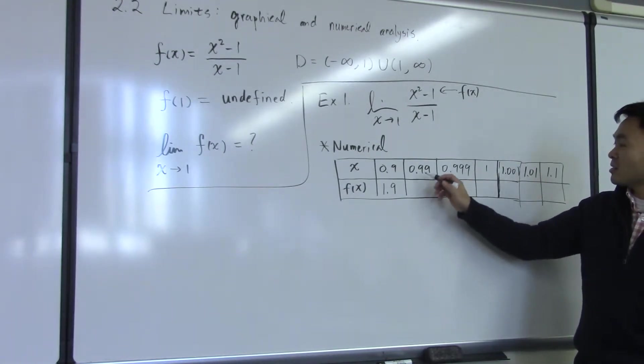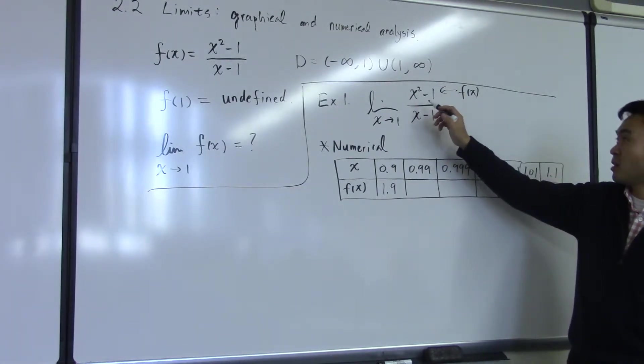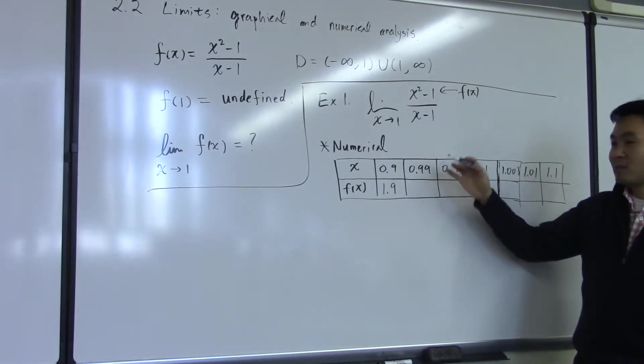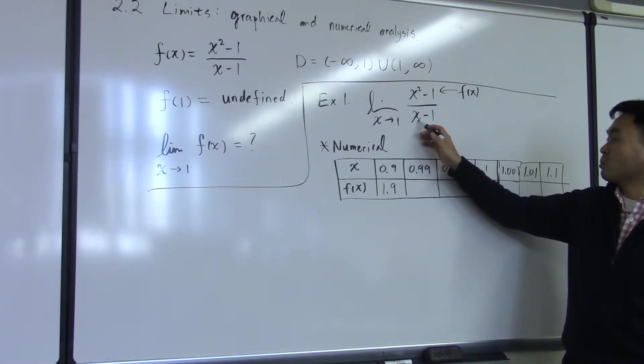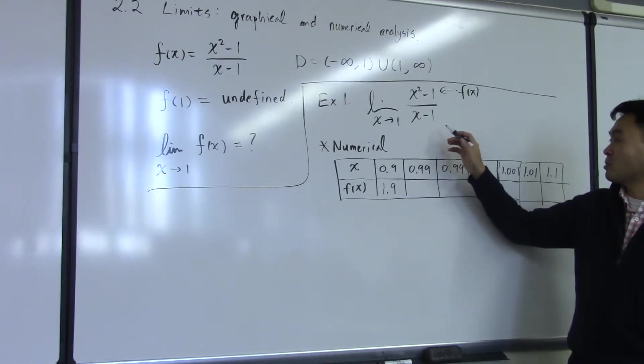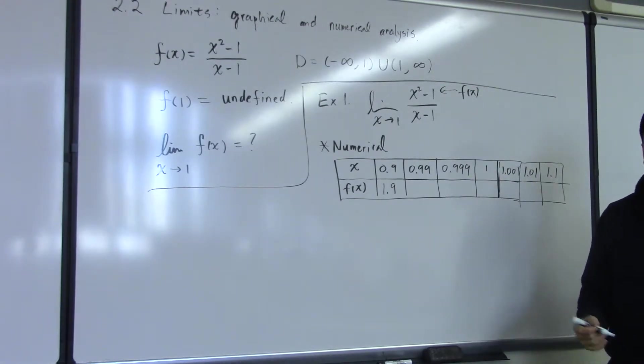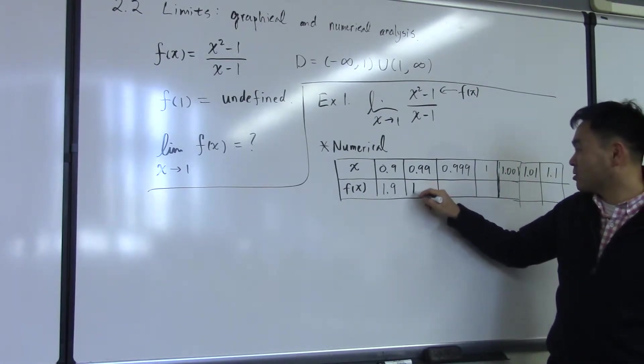Then you plug in 0.99, and that means 0.99 squared is 0.99... whatever. And then this will be 0.99 minus 1. That's negative 0.01. And if you do all the calculations that way, after some long calculations, you'll get that the answer is 1.99.